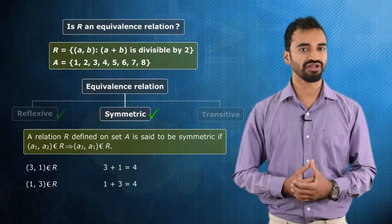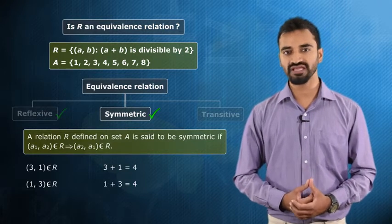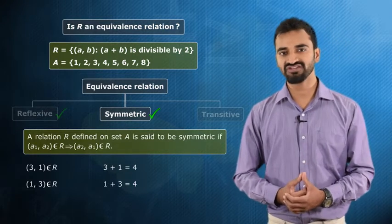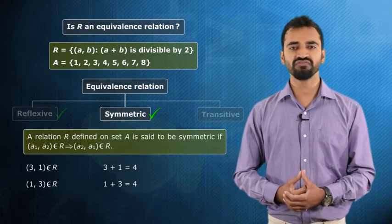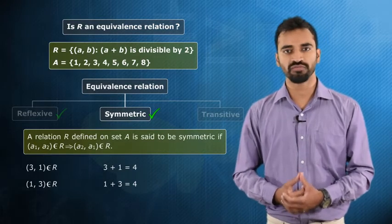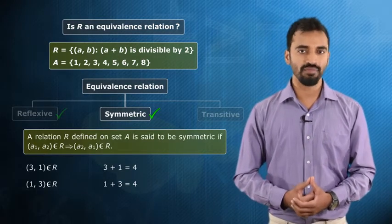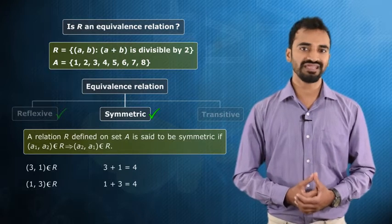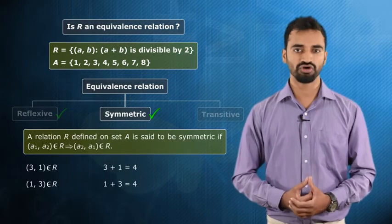Hence, we can say that the given relation R is symmetric on set A. For every a1 and a2 belonging to set A, if a1 plus a2 is divisible by 2, then a2 plus a1 is also divisible by 2. Therefore, if (a1, a2) belongs to R, then (a2, a1) also belongs to R.